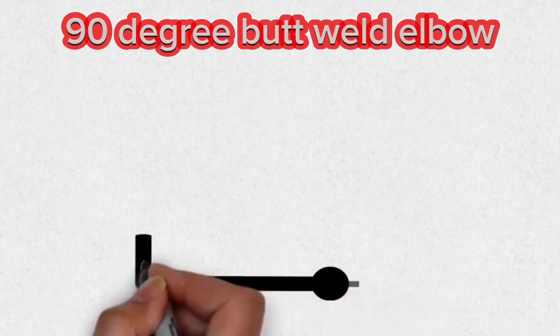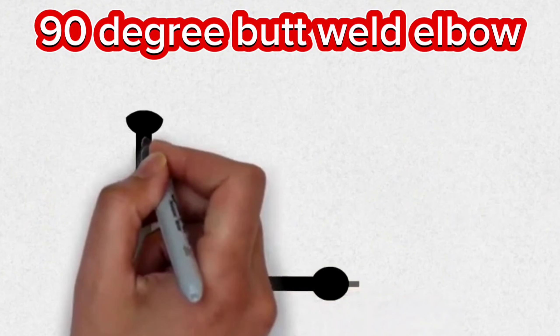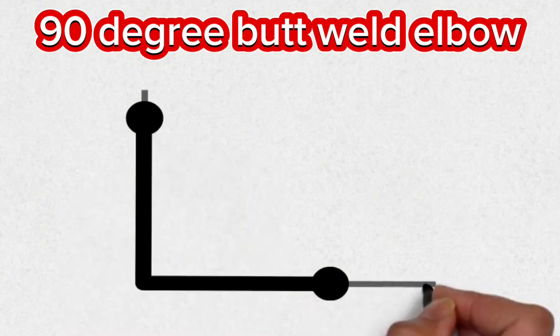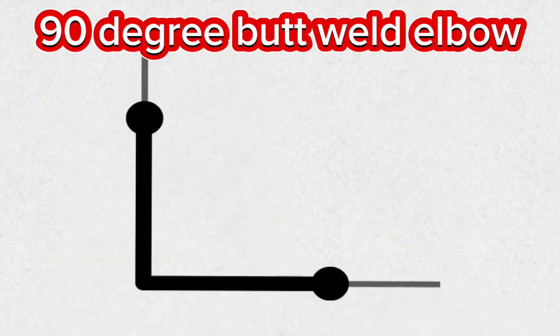This symbol, which is frequently used in pipe isometrics, is the isometric symbol of the 90-degree butt weld elbow. These 90-degree elbow symbols are used in pipeline projects where welding.